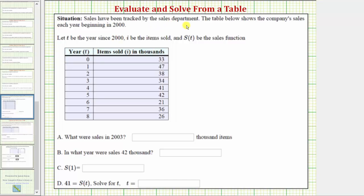Sales have been tracked by the sales department. The table below shows the company's sales each year beginning in 2000. Let t be the year since 2000, i be the items sold, and s of t be the sales function.